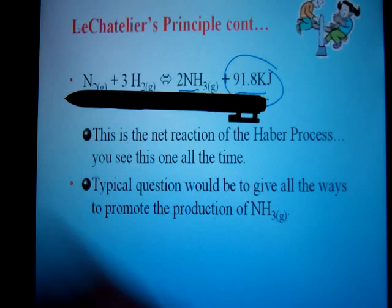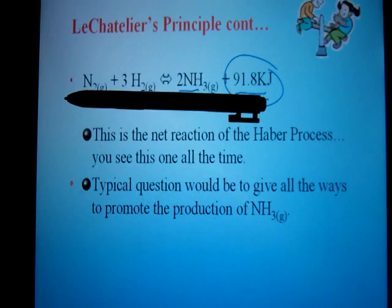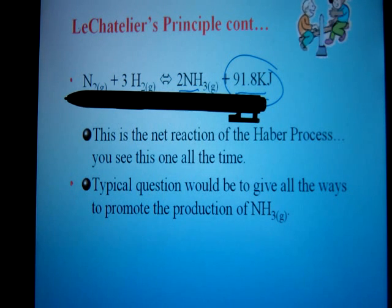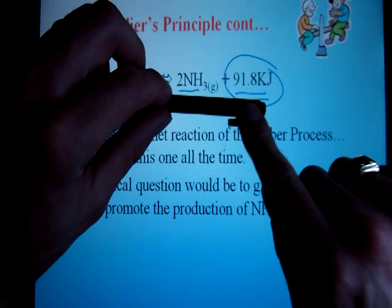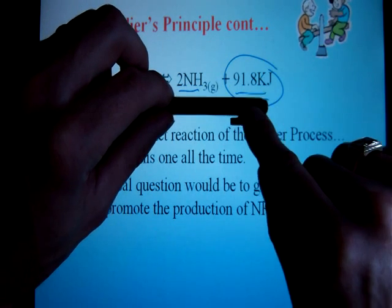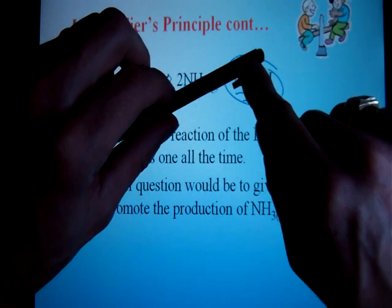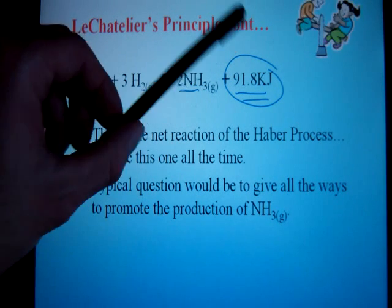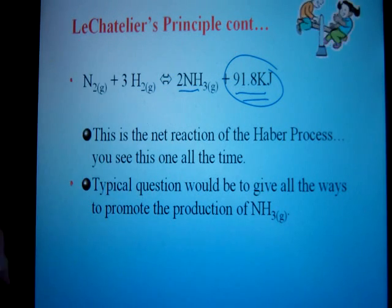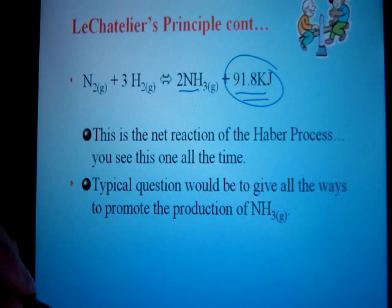So the answer must be to cool it off. If I cool it off, the system is going to want to replace the energy to warm it back up. Cooling it off is the same as taking away the energy on the product side, so that side gets lighter, and I'm going to shift to the right to replace it. That's temperature and concentration — they're kind of the same in how you deal with them.